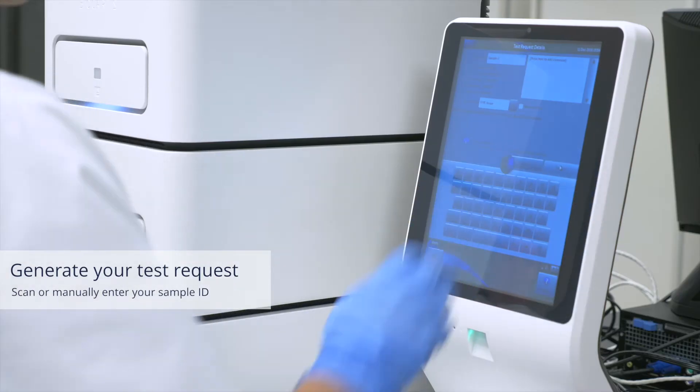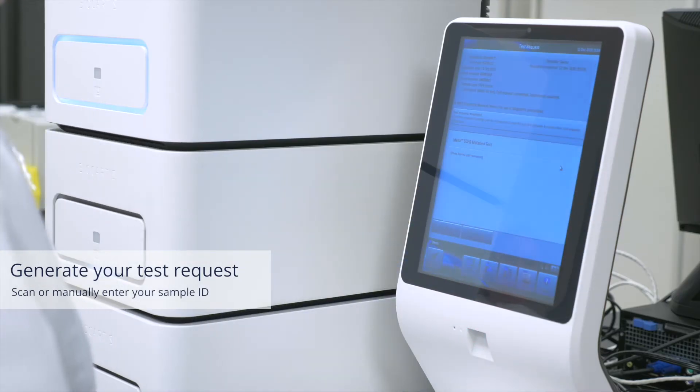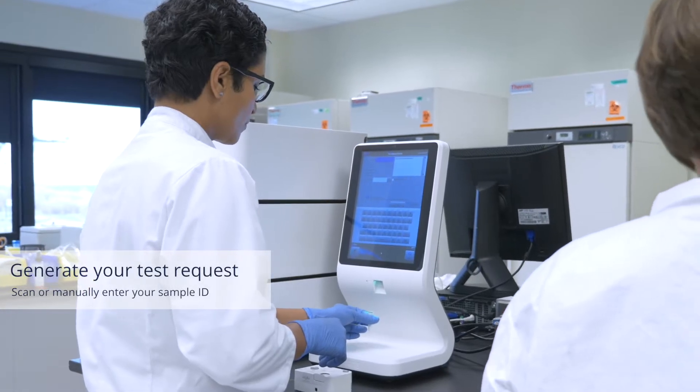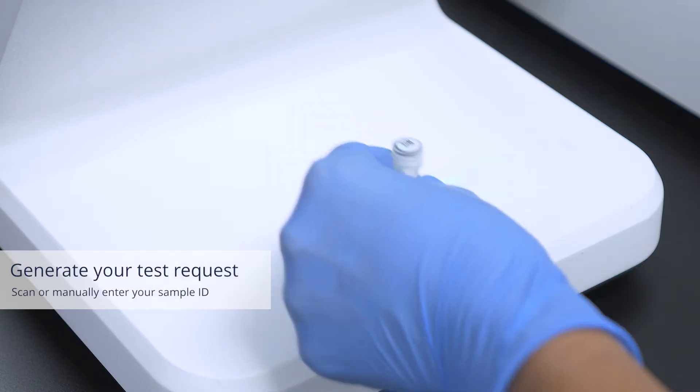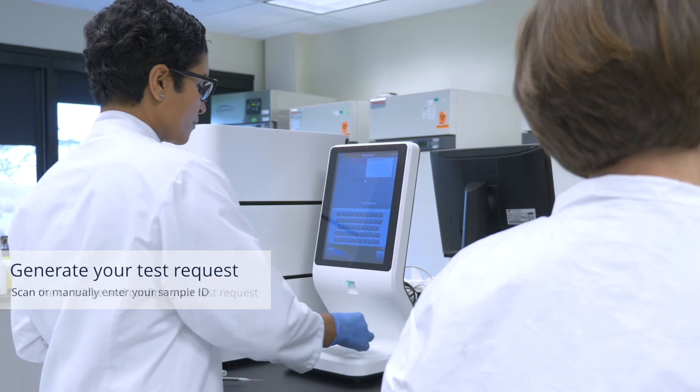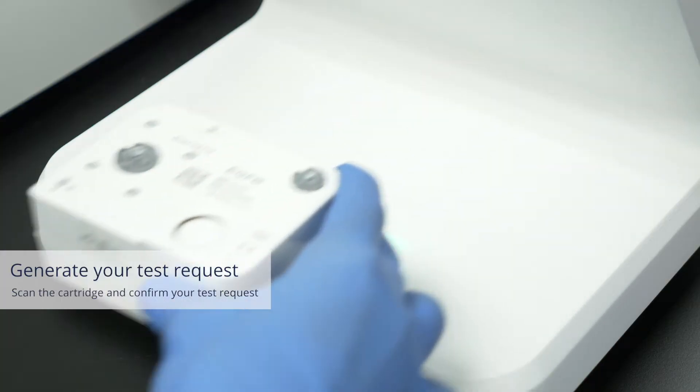Use the console to generate a new test request. Enter the sample ID by scanning the barcode. You can also enter the information manually. Scan the cartridge and confirm your test request.